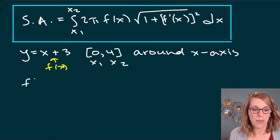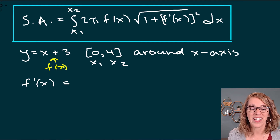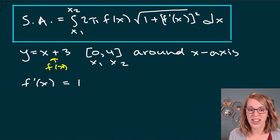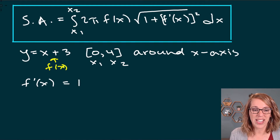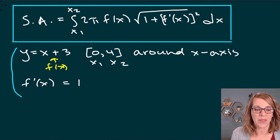f prime of x is super nice — the derivative of x plus 3 is just 1. So I think I've got everything I need to put into the formula.